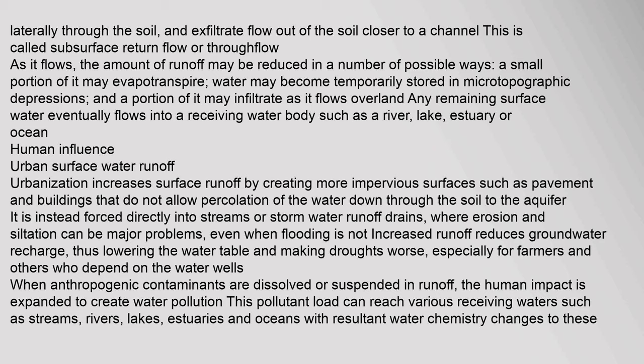Urbanization increases surface runoff by creating more impervious surfaces such as pavement and buildings that do not allow percolation of water down through the soil to the aquifer. Water is instead forced directly into streams or stormwater runoff drains, where erosion and siltation can be major problems. Runoff also reduces groundwater recharge, lowering the water table and making droughts worse, especially for farmers who depend on water wells. When anthropogenic contaminants are dissolved or suspended in runoff, the human impact expands to create water pollution reaching streams, rivers, lakes, estuaries, and oceans.